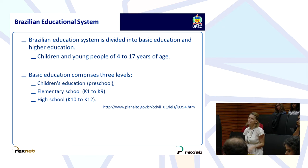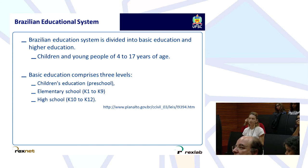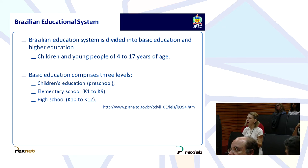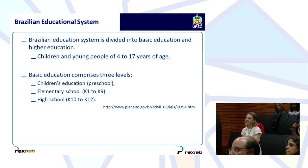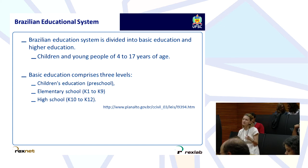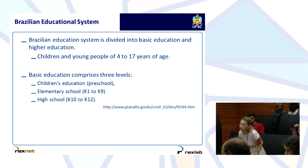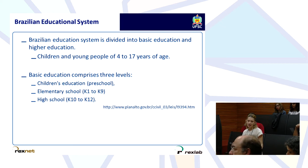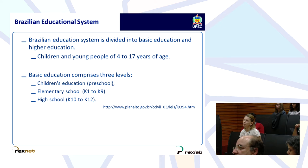The Brazilian education system is divided into basic and high education, for children and young people up to 17 years of age. The Brazilian-based education comprises three levels: children's education and preschool, elementary school K1 to K9, and high school K10 to K12.